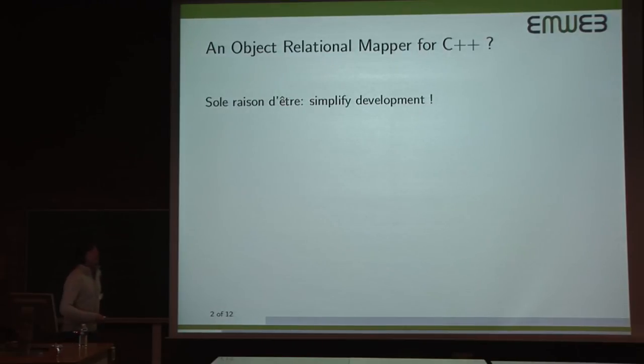So why would we want to have an ORM for C++? Not only because there is one for every language out there and a good library is lacking for C++, but the real reason is that we want to simplify our development.